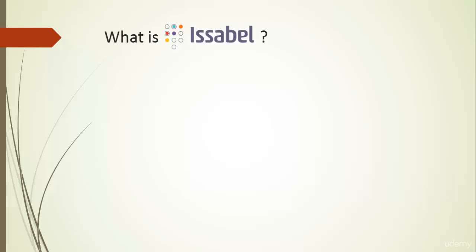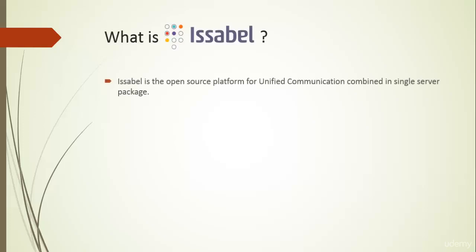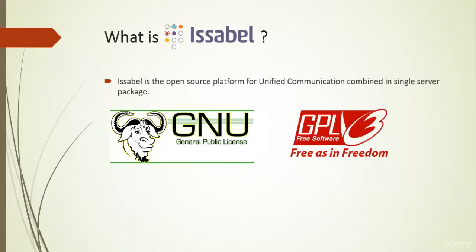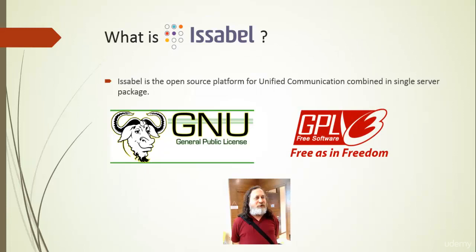Before we deep dive into the course, let's start from scratch. So what is Issabel? Issabel is the open source platform for unified communication combined in a single server package. Open source means it is available with the source code and no licensing costs, as it is under GNU GPL. GNU GPL is a software licensing type created by the Free Software Foundation by Richard Stallman.